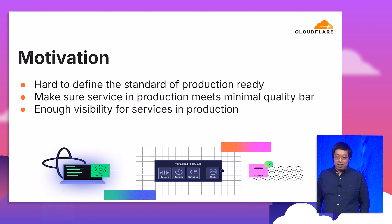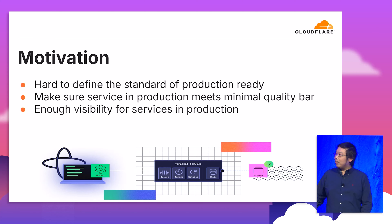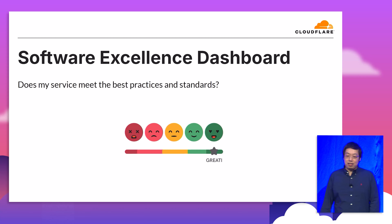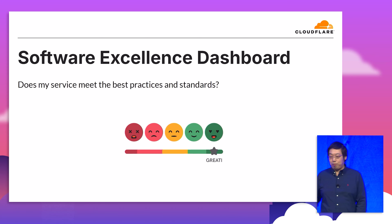Our motivation is to make sure your service is production-ready. We want to make sure your service has all the CI/CD pipeline setup. We also want to help developers build better, more production-ready applications. That's why we are building the Software Excellence Dashboard — a dashboard that shows your production readiness scores and gives you suggestions on what you can improve to become more production-ready.